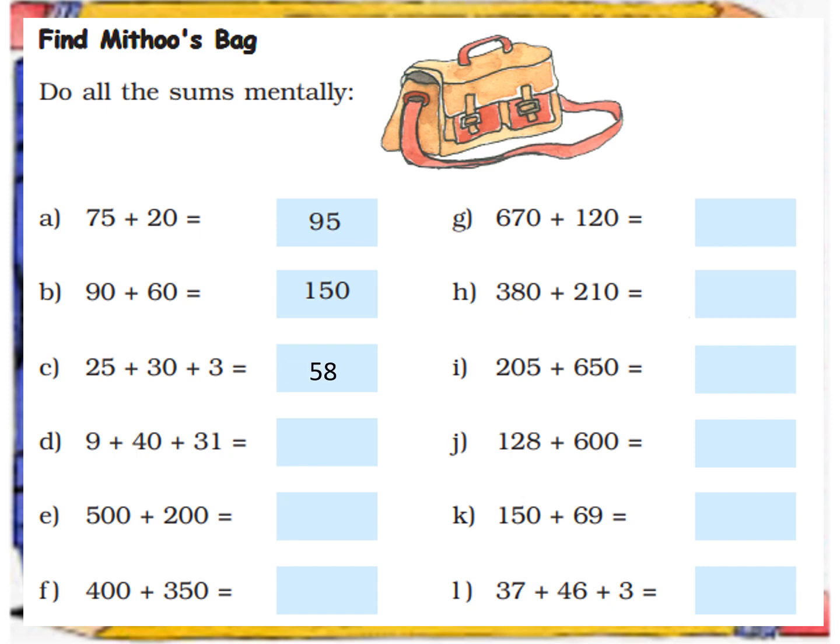In the next sum we have 9 plus 40 plus 31, so here we have friends of 10, that is 9 and 1. When we will add them together we will get 10. Now the sum will be very easy, we have to just add 40 plus 30 plus 10, and the answer will be 80. Next we have 500 plus 200, it is a very easy question, the answer is 700. Then we have 400 plus 350. Here to get the answer we will use the trick which was double plus 1, as we have 3 consecutive numbers here, 4 and 3. So we will double 3 which will be 6, then add a 1 to it, we will get 7, so the answer will be 750.